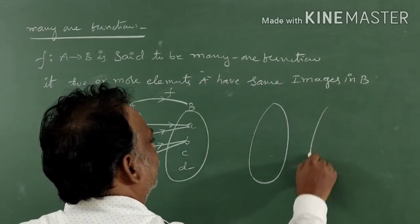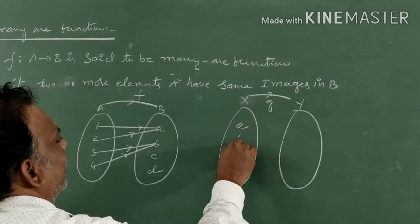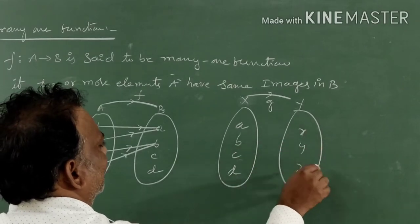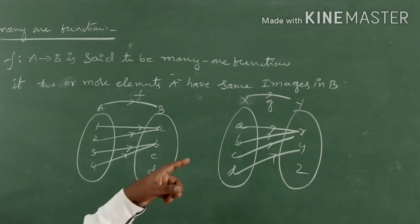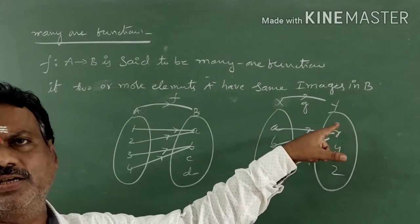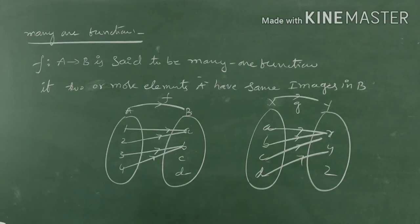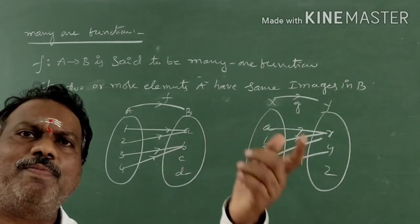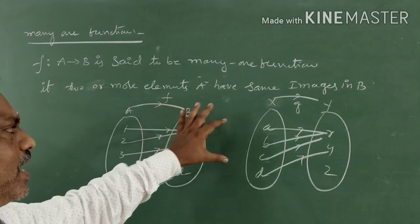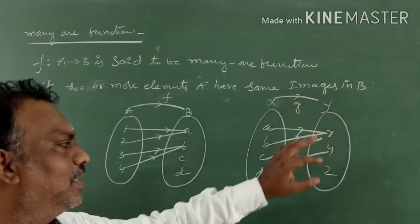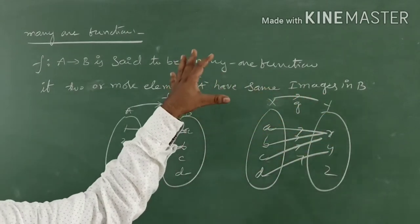Let me take one more example. Set X and set Y are related with function G. We take {a, b, c, d} in set X and {x, y, z} in set Y. In set X, more than two elements — a, b, c — all three elements have the same image x. So a→x, b→x, c→x. That is why it is called a many-one function. Many-one means two or more elements of set A have the same image in set B. Here, one and two have the same image a; three and four have the same image b. In the second example, a, b, c all have the same image x, while d has image y. More than two elements have the same image, so it is called a many-one function.